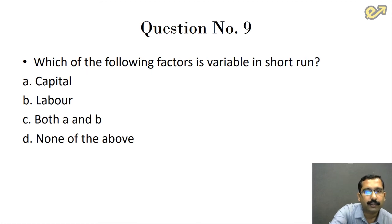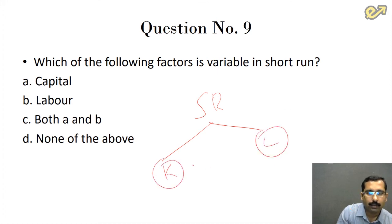Which of the following factors is variable in short run? In short run, according to the Cobb-Douglas equation, we generally consider two inputs: capital and labor. We keep capital as a constant factor and labor as a variable factor. So the answer is option B, labor.